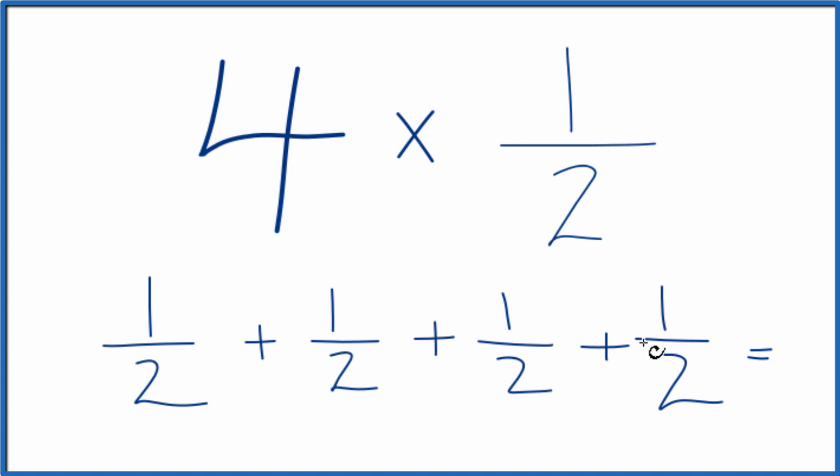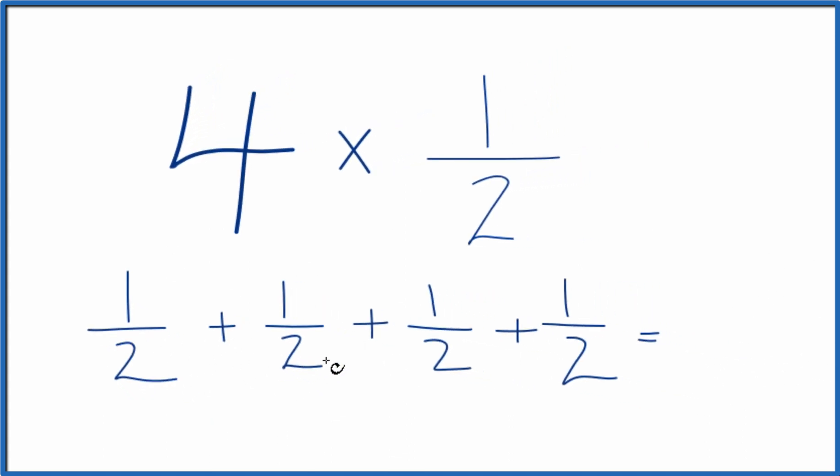We add them together with fractions. When you're adding fractions with the same denominator, you just bring the denominator across, add the numerators. One plus one plus one plus one, that's four.